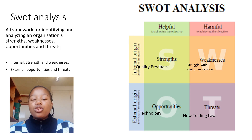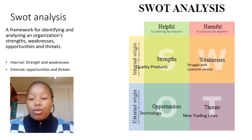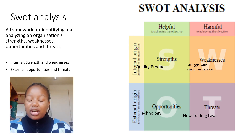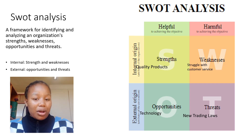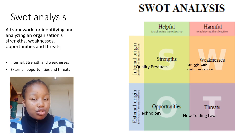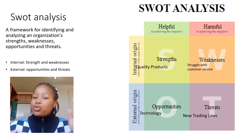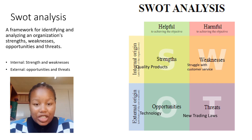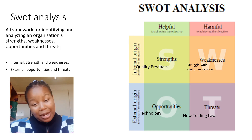The internal factors look like strengths and weaknesses, and the external factors look like opportunities and threats. Looking at each individual block: strengths would be the quality of products that the business produces — something the business has full control over, which gives it competitive advantage over its competitors. Weaknesses are internal problems that the business already knows about and can change, such as struggling with customer service and implementing processes to improve that.